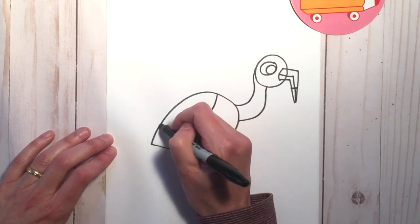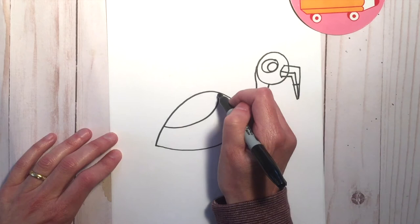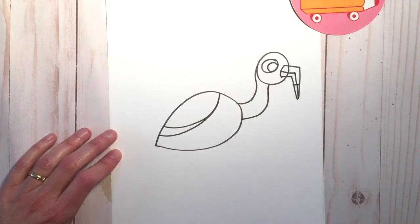Right here, we're going to make the wing and then we're going to repeat this line and have it come down a little further.